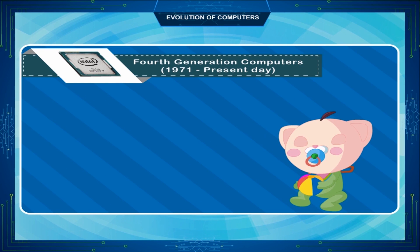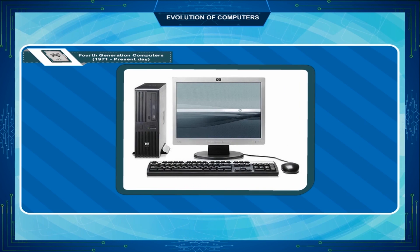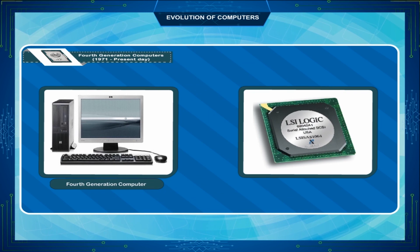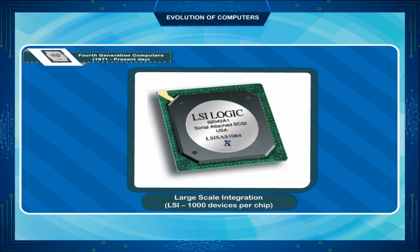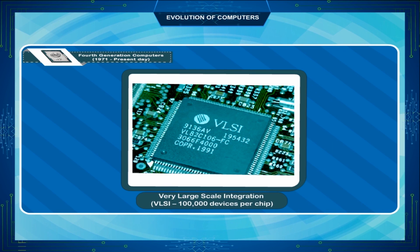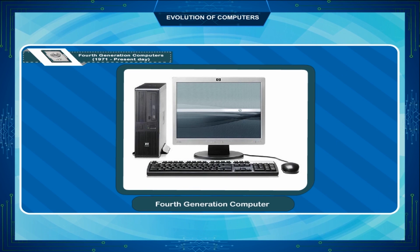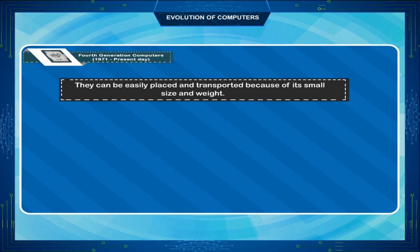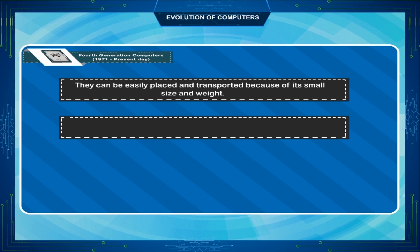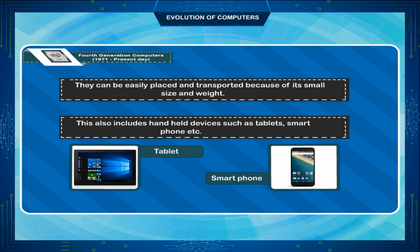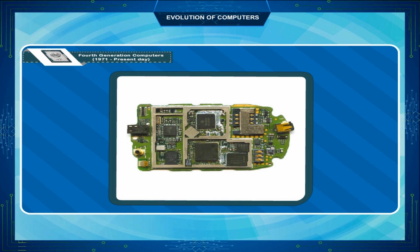Fourth generation computers, from 1971 to the present day, used large-scale integration (LSI, 1000 devices per chip) and very large-scale integration (VLSI, 1 lakh devices per chip) in the construction of computing elements. These computers were cheaper, faster, more accurate and reliable than any previous generation. They can be easily placed and transported because of their small size and weight, and include hand-held devices such as tablets and smartphones. They require very small ICs and microprocessors.